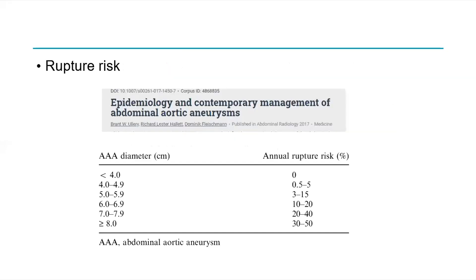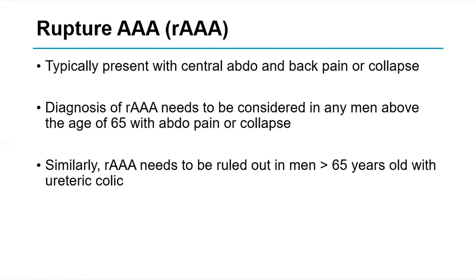Based on Laplace's law, as aortic diameter increases, rupture risk increases. We consider treating at 5.5 cm where the rupture risk is 3–15%. Above 8 cm the risk is up to 50%. Ruptured AAA typically presents with central, loin, or back pain, or collapse. Anyone with abdominal pain or collapse over the age of 65 — especially men — should always have ruptured AAA considered. Failure to consider it may lead to time delay and the patient not surviving the hospital episode.